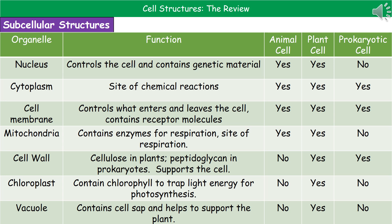The next thing we need to know is where subcellular structures are found and what their function is. The nucleus controls the cell and contains the genetic material — found in both plant and animal cells, but not in prokaryotic cells. The cytoplasm is the site of chemical reactions and is found in all three cell types. The cell membrane controls what enters and leaves the cell as a partially permeable membrane, present in all three cell types, and also contains receptor molecules for communication between cells embedded on its surface.